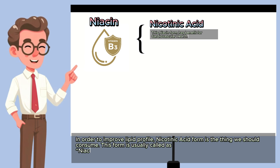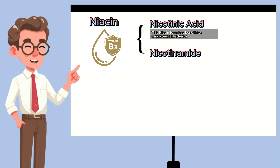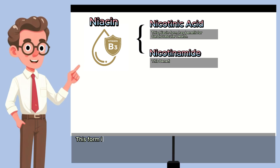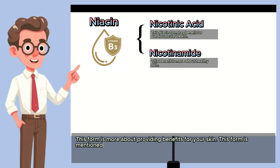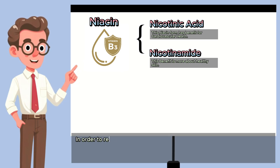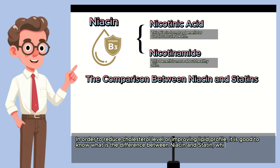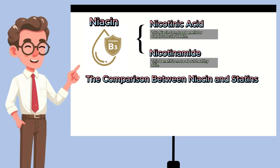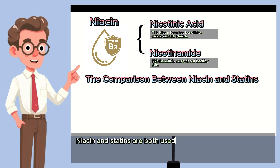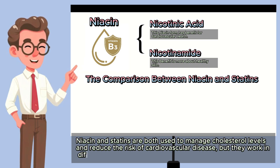Second is nicotinamide. This form is more about providing benefits for your skin and is referred to as niacinamide. In order to reduce cholesterol levels or improve lipid profile, it is good to know the difference between niacin and statins, which are widely known as substances to reduce cholesterol levels. Niacin and statins are both used to manage cholesterol levels and reduce the risk of cardiovascular disease, but they work in different ways and offer unique benefits.